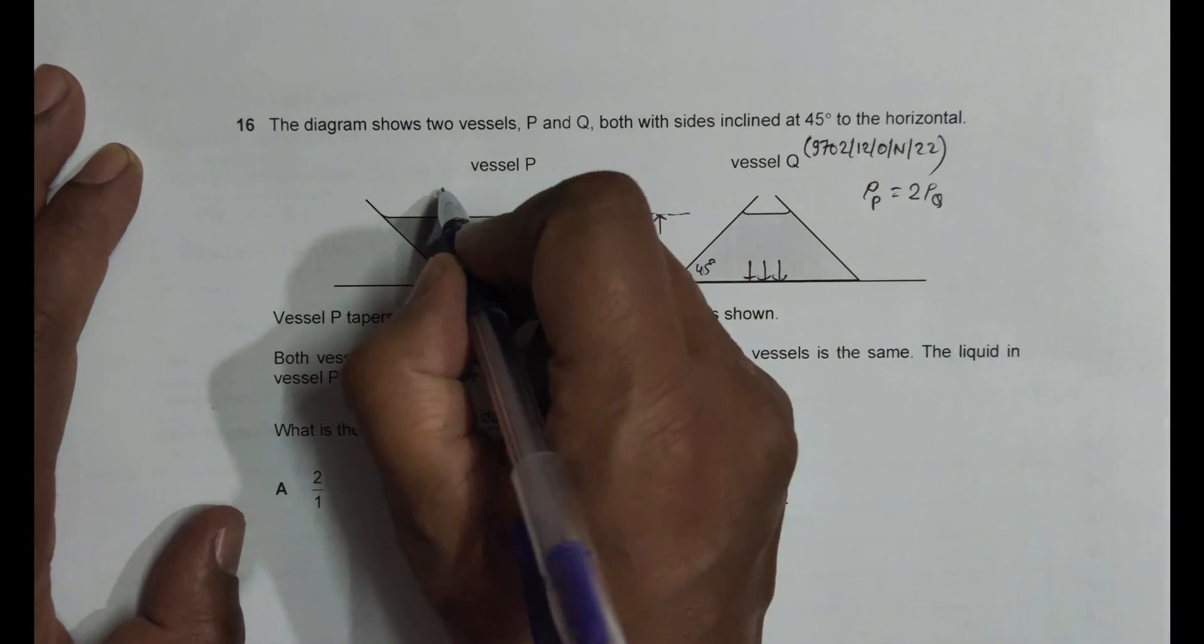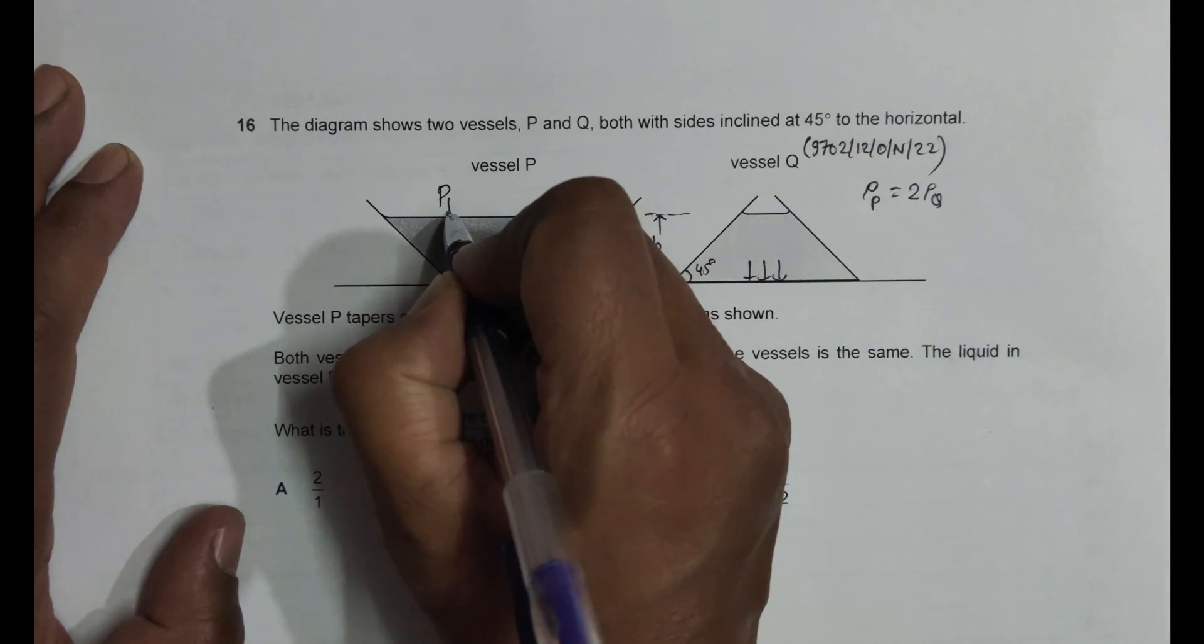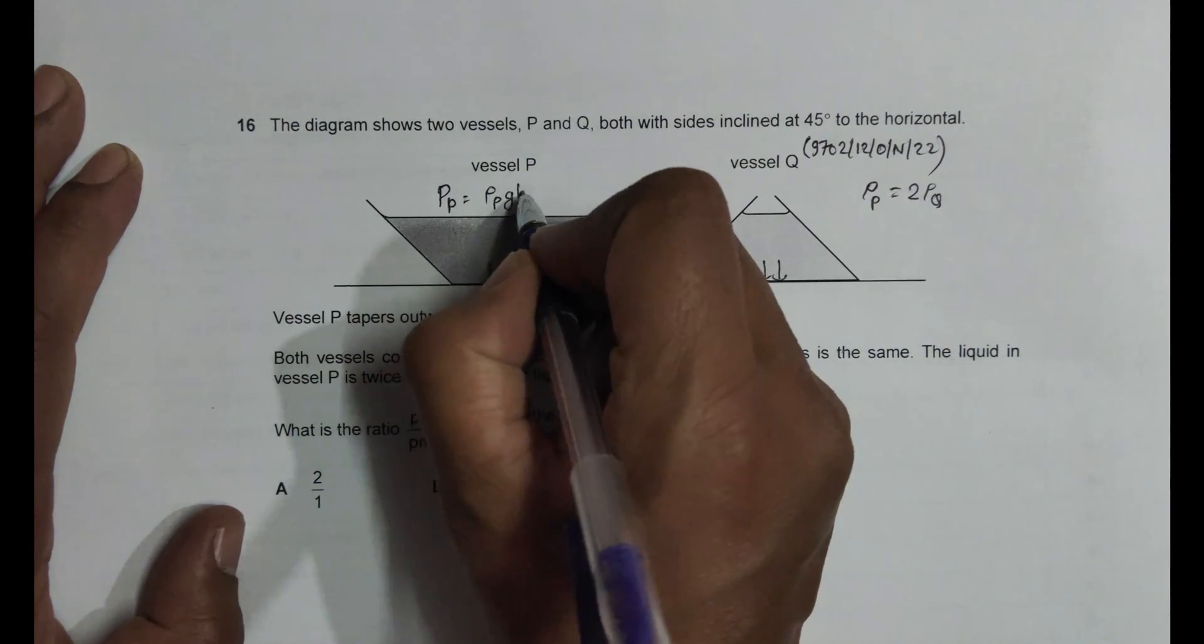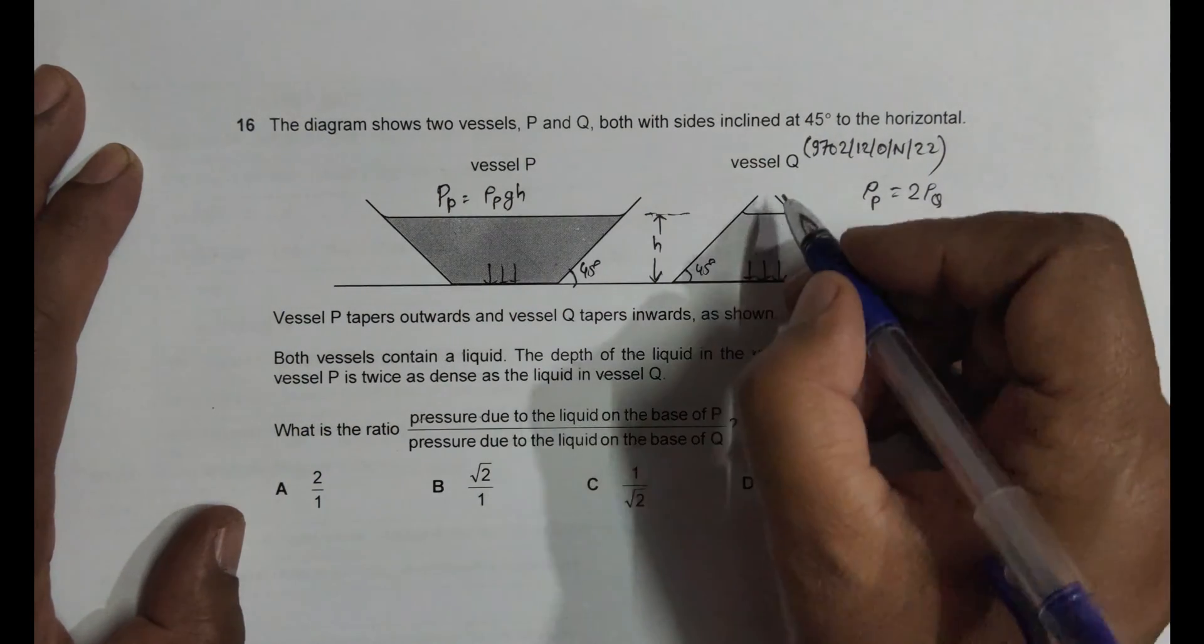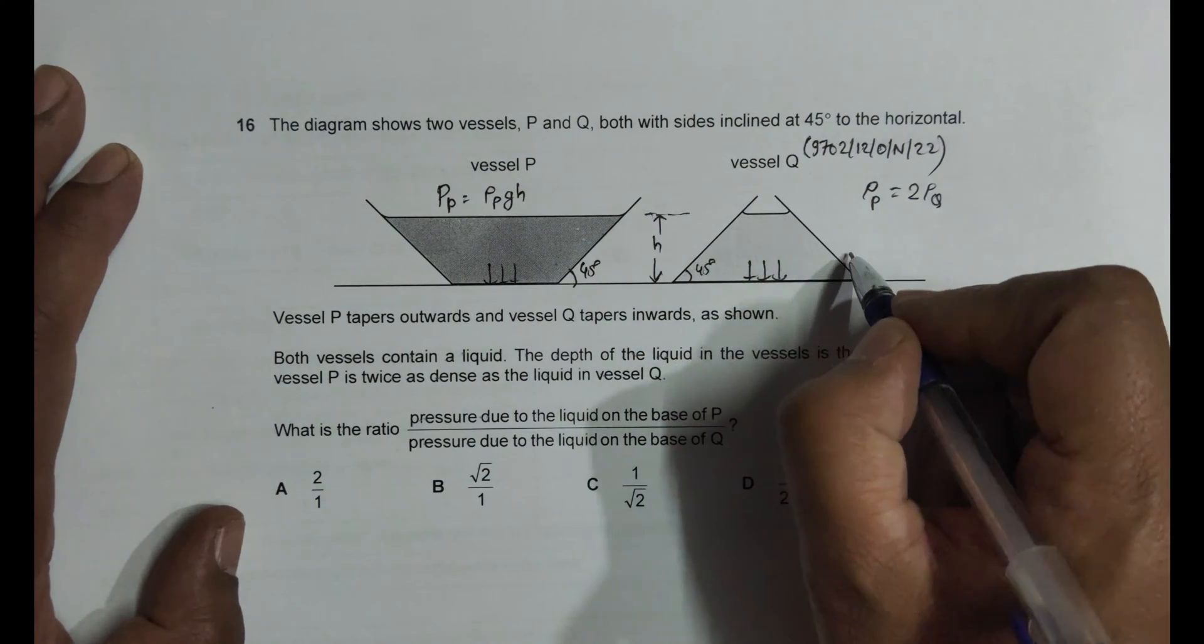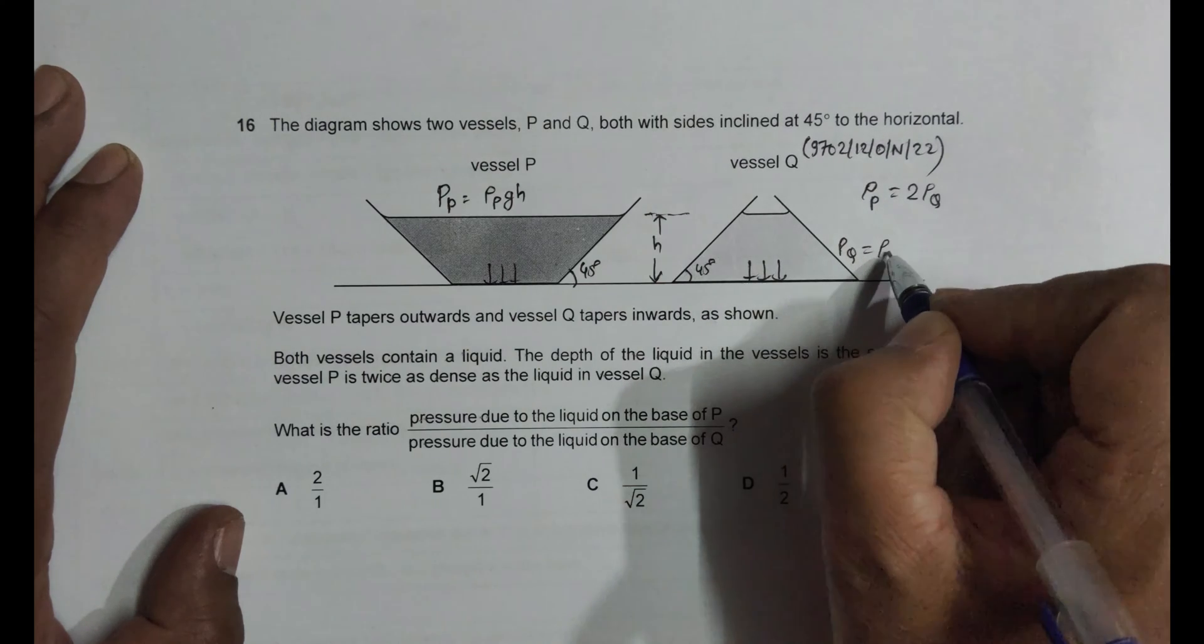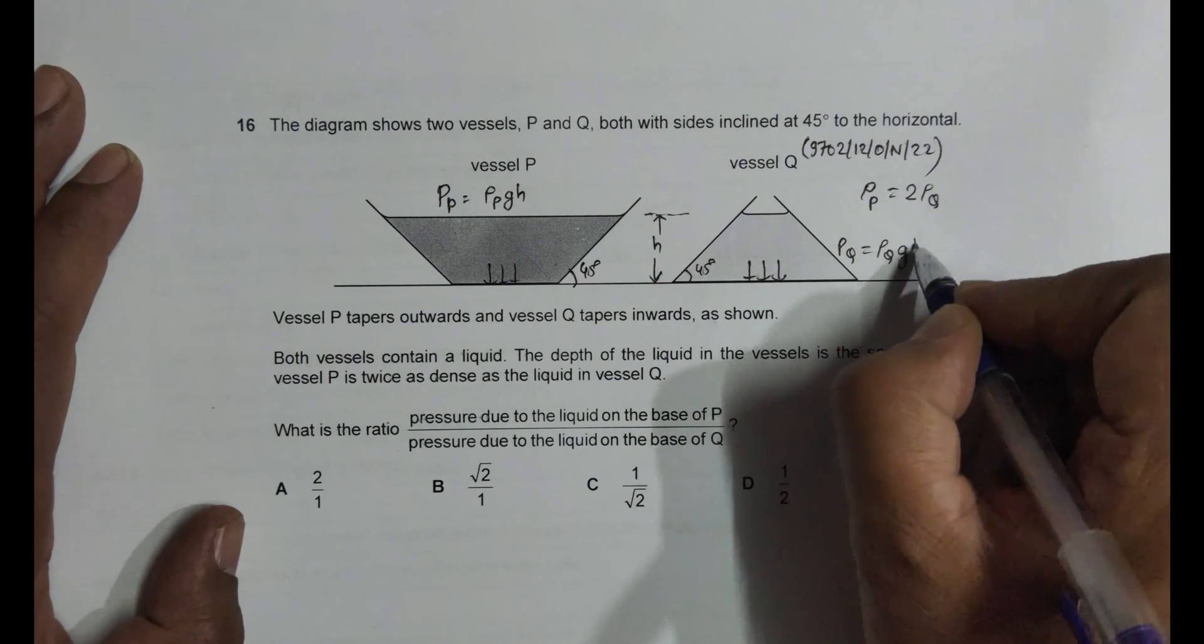So what we'll have here is the pressure at the base of P is equal to ρ_P·G·H. And the pressure at the base of Q is equal to ρ_Q·G·H.